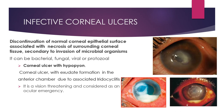The main topic of today's discussion is infective corneal ulcer. Infective corneal ulcer, infective keratitis, and microbial keratitis are all the same thing. It is defined as the discontinuity of the normal corneal epithelial surface associated with necrosis of surrounding corneal tissue secondary to invasion of microbial organisms. Mostly they are bacterial in origin, but they can also be due to fungi, viruses, or protozoa.